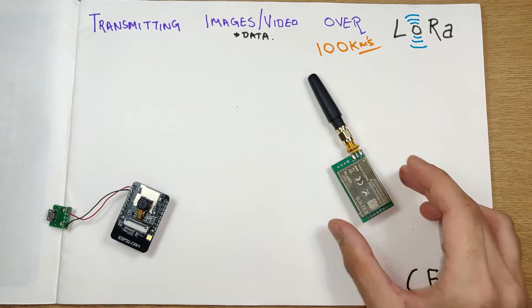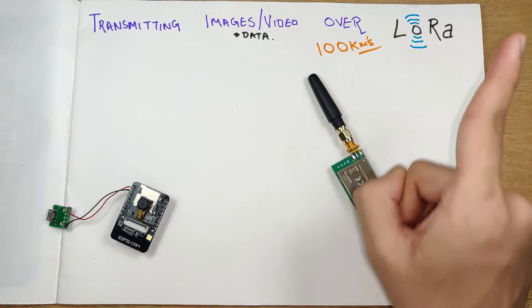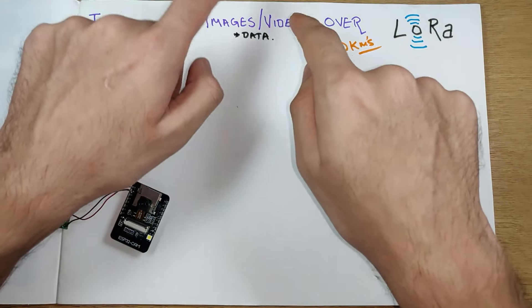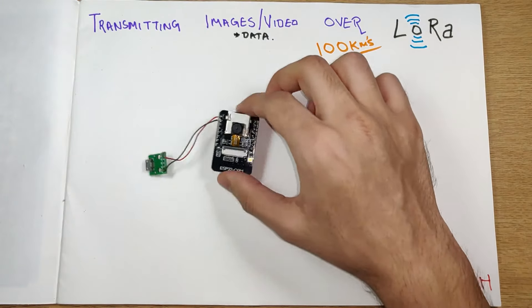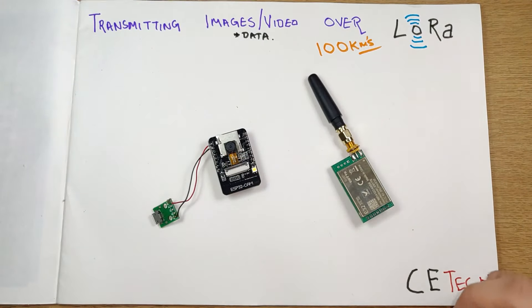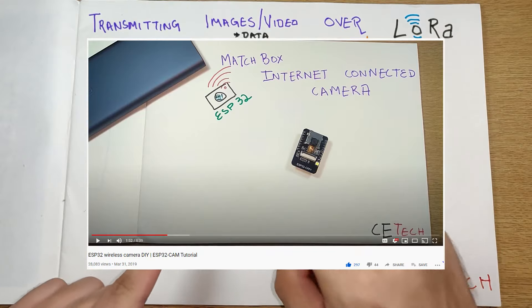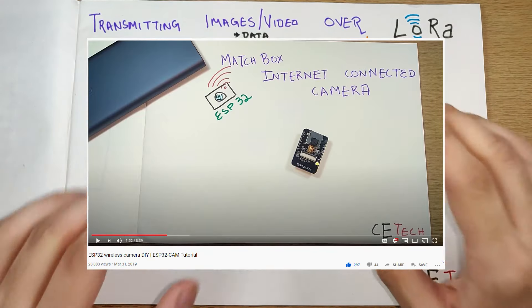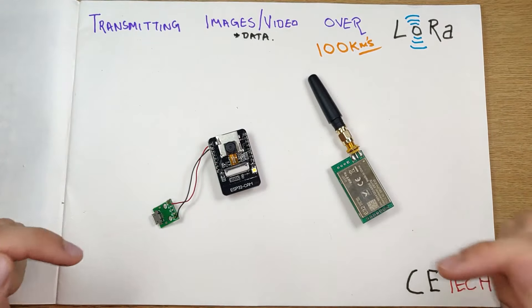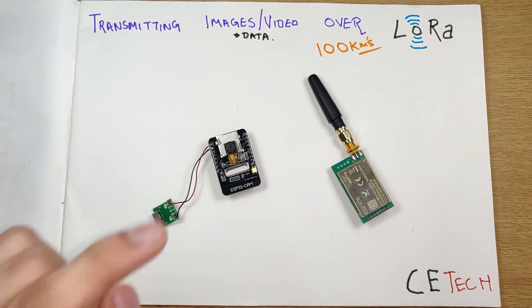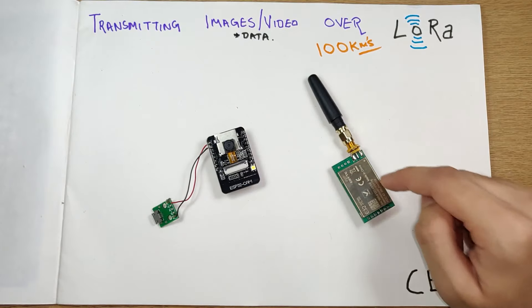For capturing images and video, we'll be using a camera like this - the ESP32 cam which has a camera over here. I've done a video on this as well, check that out from here. All the relevant links for the video will be in the description box below.